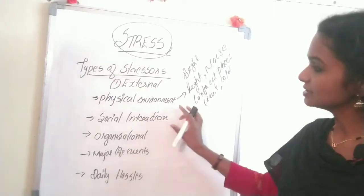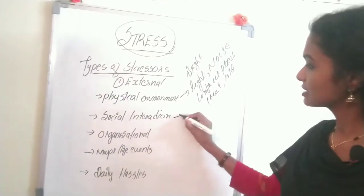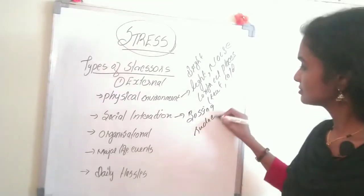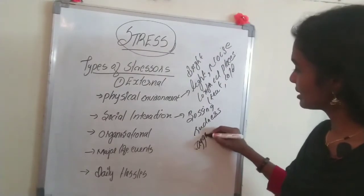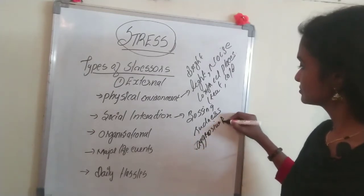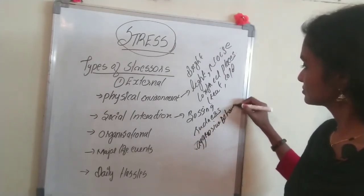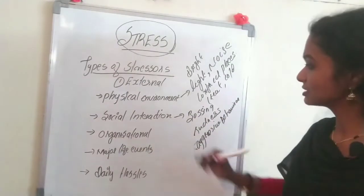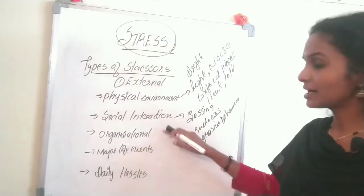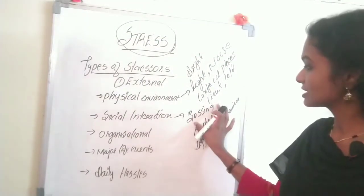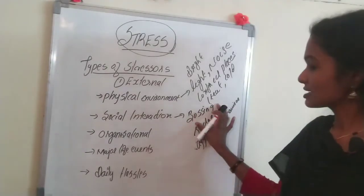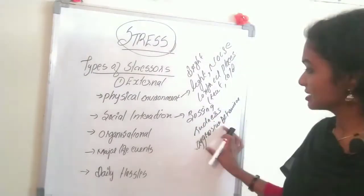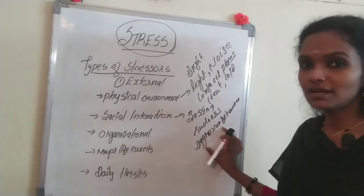Another external factor is social interaction. Examples include bossing, rudeness, and aggressive behavior by other persons. While interacting with others, the behavior of others can cause stress. Bossing means when there is an excessive demand from the boss at the workplace. Rudeness and aggressive behavior by others can also create stress for a person.